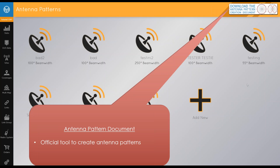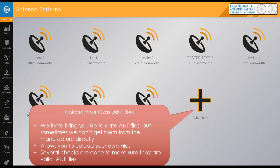Next we have antenna patterns. These are exactly what they sound like — the antenna pattern based on the manufacturer spec. We have an official tool to create antenna patterns by downloading the antenna pattern creation document. That spreadsheet gives you all the necessary information to ensure your antenna pattern is correct and accurate. You can also upload your own ANT files. We keep antenna files from manufacturers on our website, but you need to make sure those are accurate. We only add antenna patterns that come directly from the manufacturer — not forwarded emails or re-downloads.